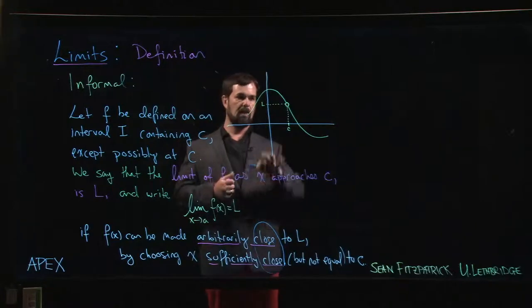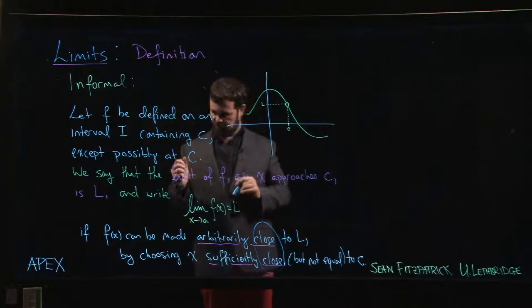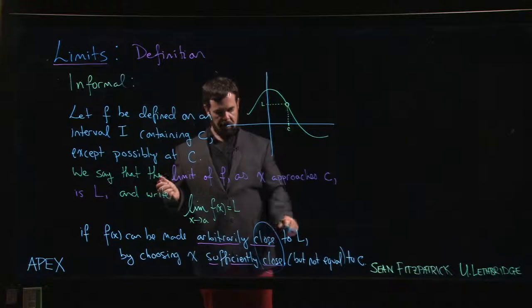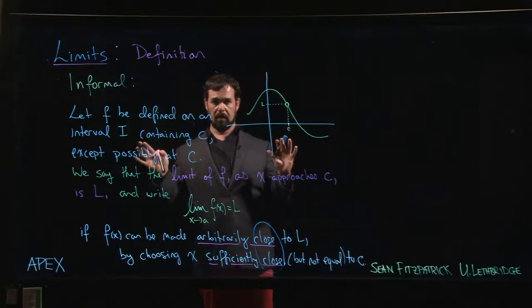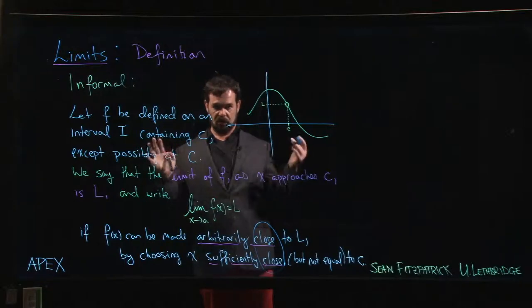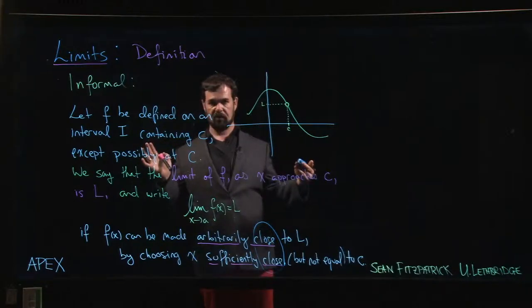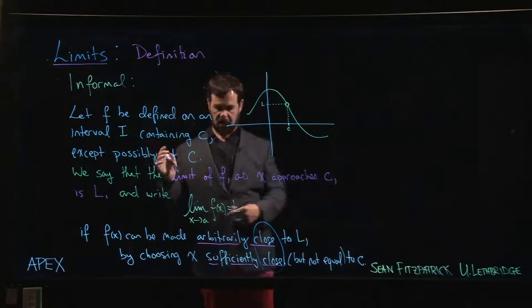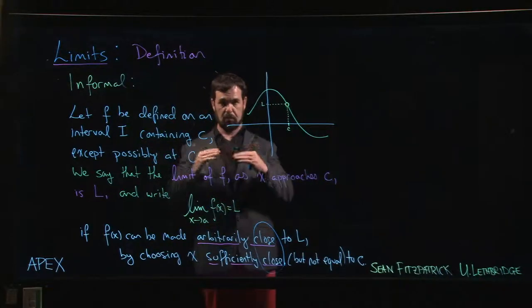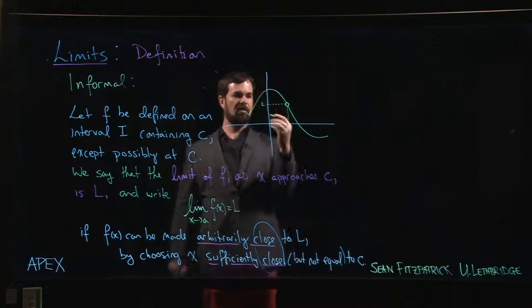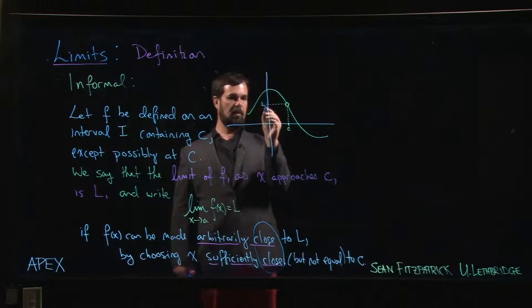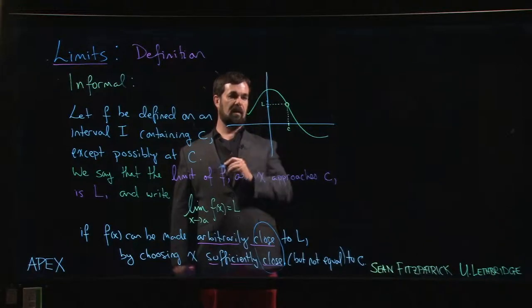I want to be arbitrarily close to L, so that means you can tell me how far apart you want things to be. You can choose a particular degree of closeness and I've got to make sure that I can get my function that close. Close here sort of means some distance away from L, and that distance could be one side or the other. Maybe we say I want to be in this range here - f(x) has to land somewhere in there.